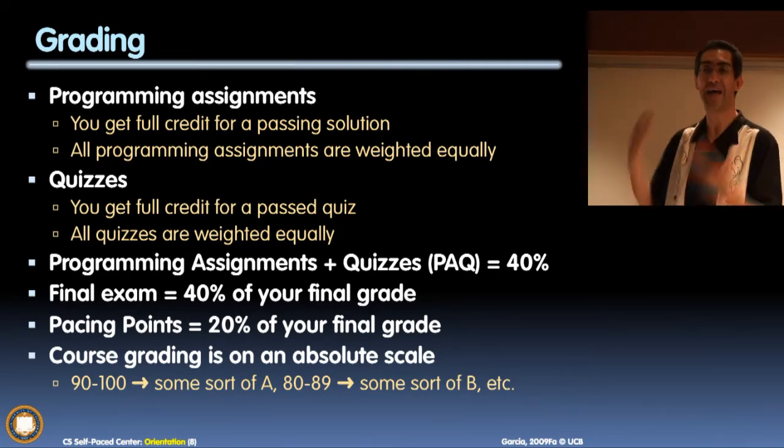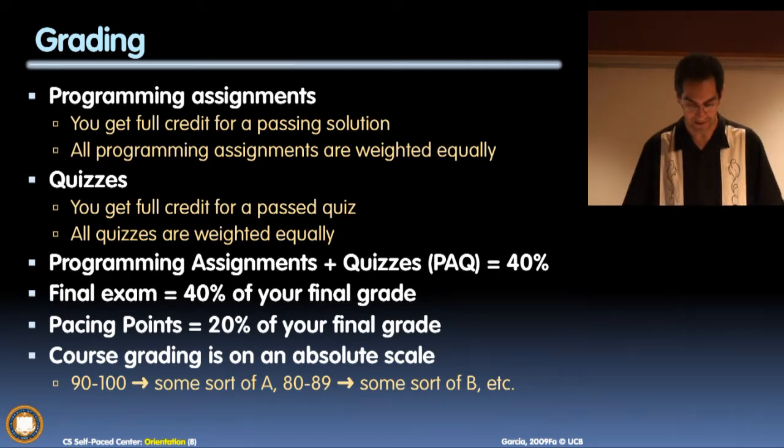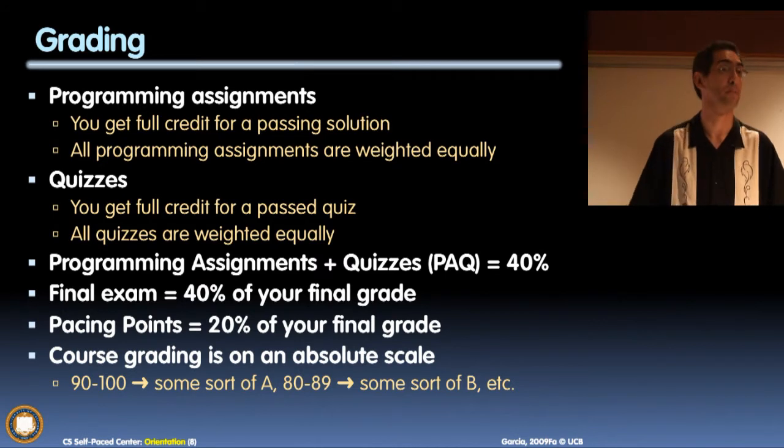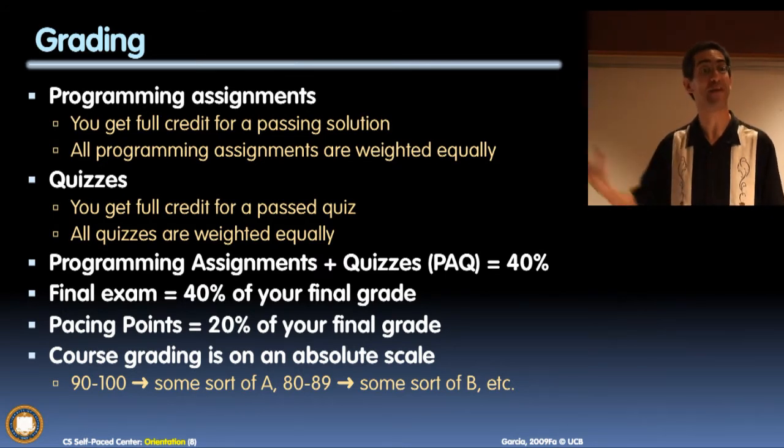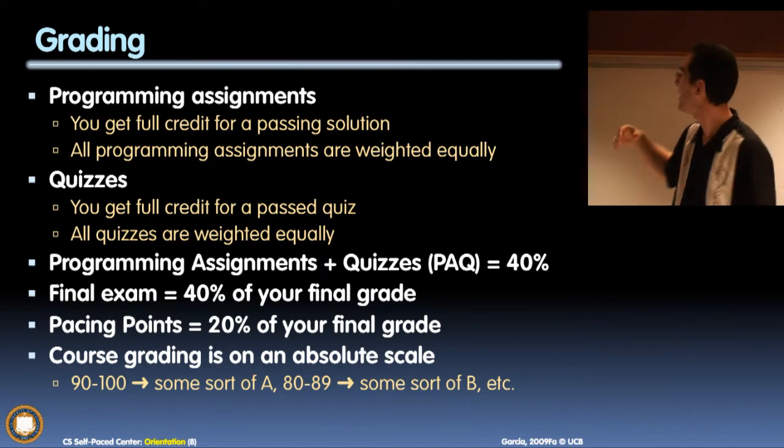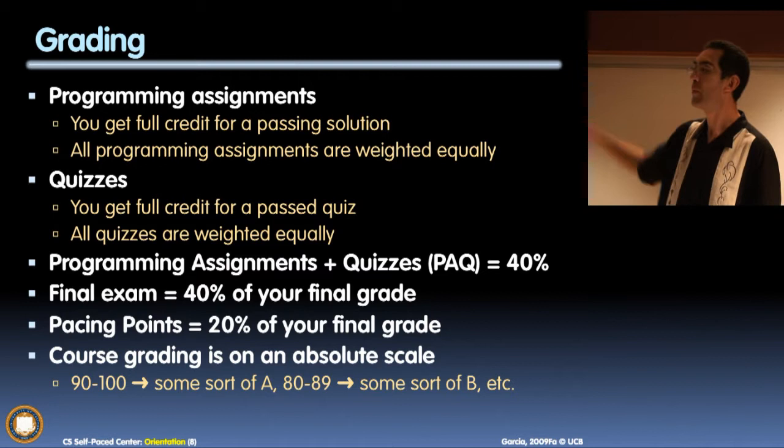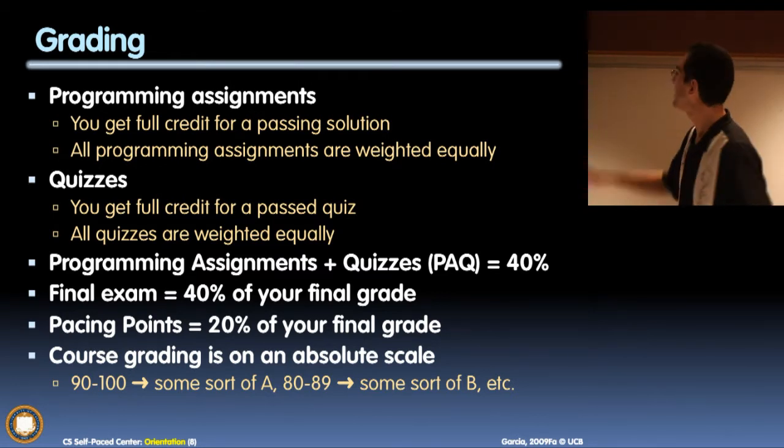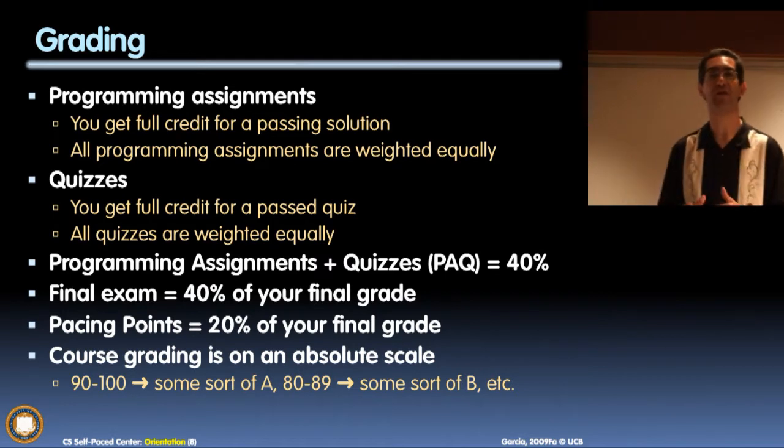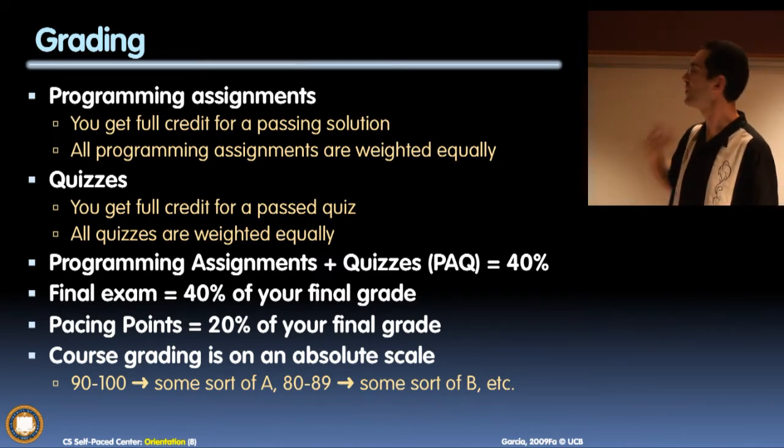However many assignments you've done, we divide up 40% into that. So if there are ten of them, each one's worth four percent. If you've done eight of them you get 32 and you've lost eight PAQ points. Then you got a final exam that's worth 40%. That's 80%. We give this thing called pacing points for 20%. So just doing things that if you put enough effort in, you should be able to ace those 40 points of the PAQ.